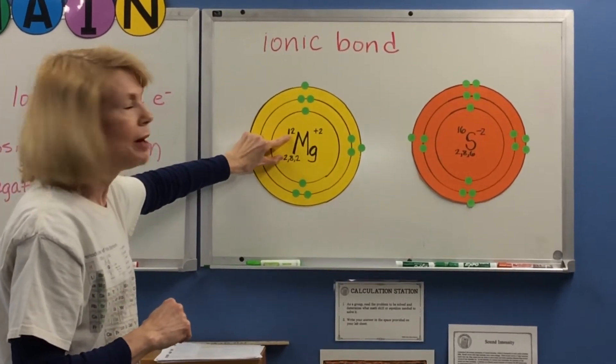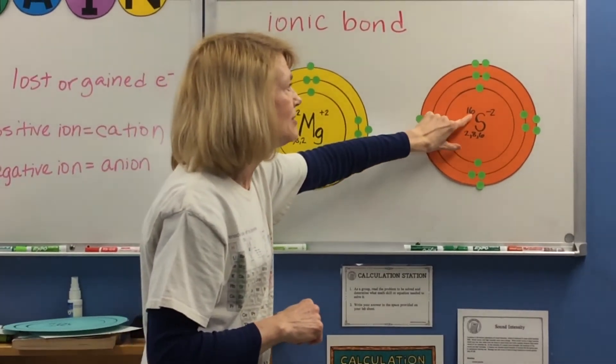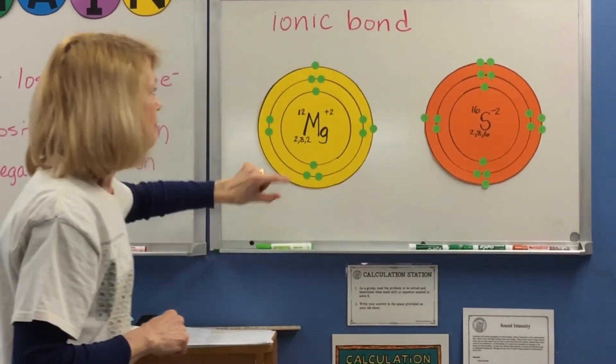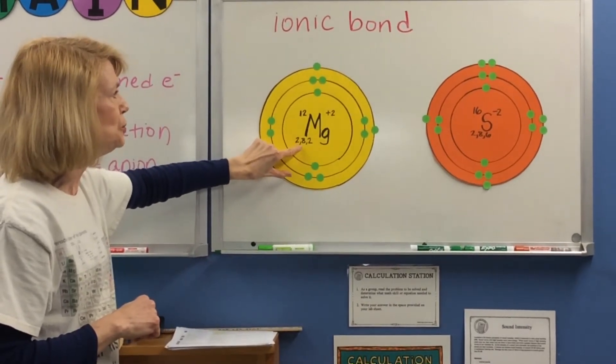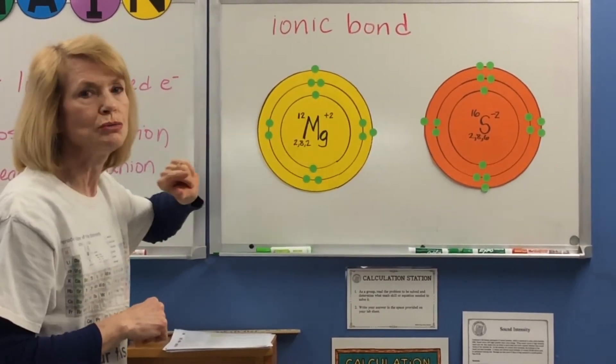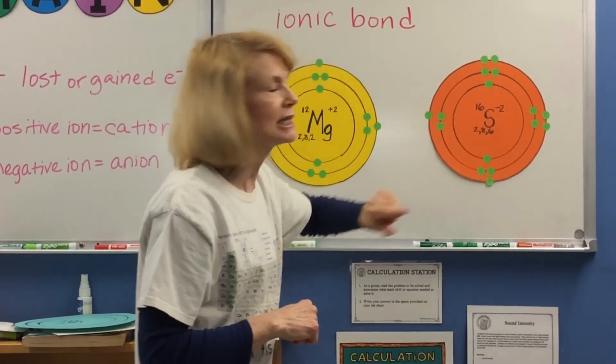Magnesium has an atomic number of 12. Sulfur has an atomic number of 16. Magnesium's electrons are in the configuration 2, 8, 2. Sulfur's are in the configuration 2, 8, 6.